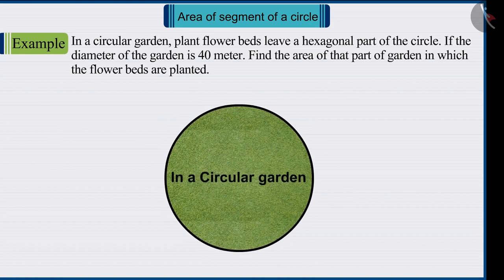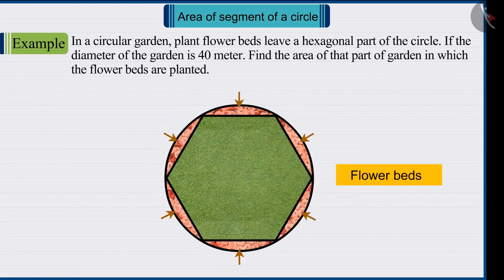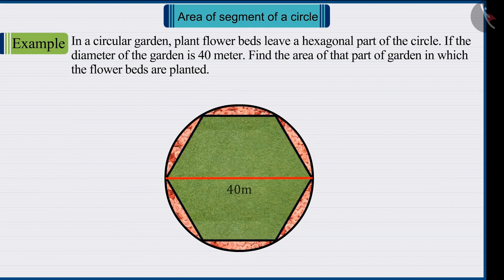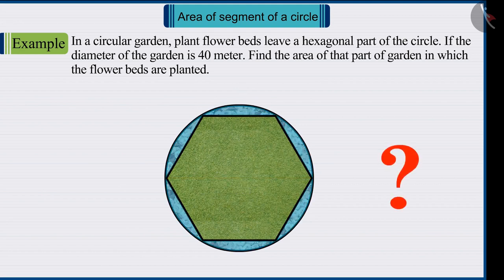In a circular garden, plant flower beds leave a hexagonal part of a circle. If the diameter of the garden is 40 meters, find the area of that part of the garden in which the flower beds are planted.